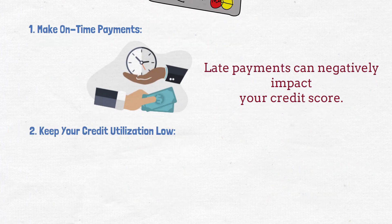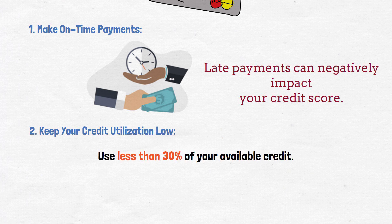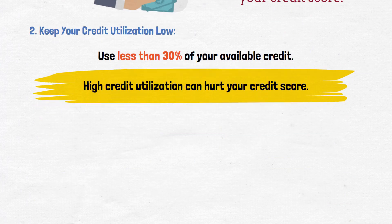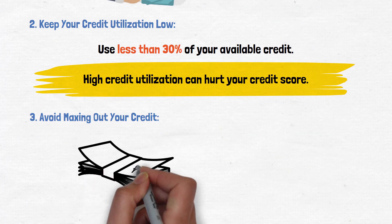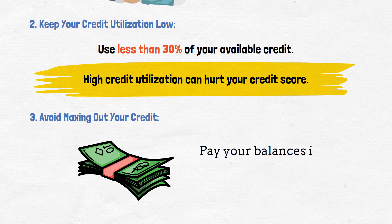Keep your credit utilization low: Aim to use less than 30% of your available credit. High credit utilization can hurt your credit score. Avoid maxing out your credit: Try not to carry high balances on your credit cards. Pay your balances in full whenever possible to avoid accruing interest.